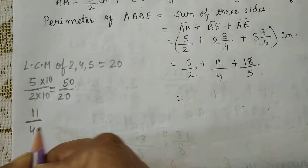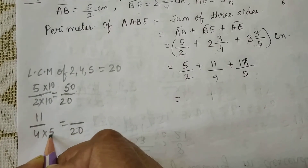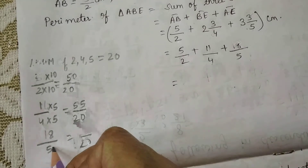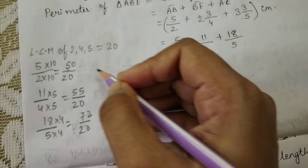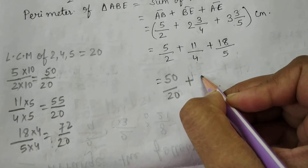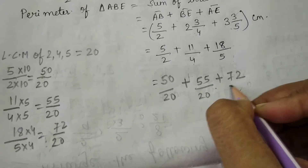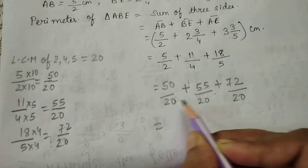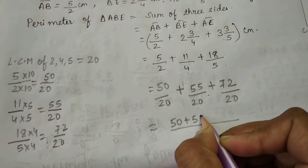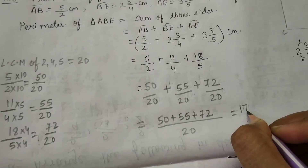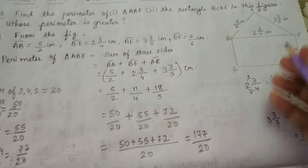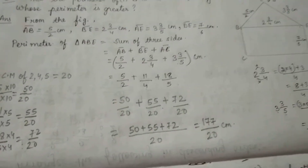For 11/4: 4×5 = 20, so 11×5 = 55, giving 55/20. For 18/5: 5×4 = 20, so 18×4 = 72, giving 72/20. Now add: 50/20 + 55/20 + 72/20. Keep the common denominator 20 and add the numerators: 50 + 55 + 72 = 177. So the perimeter of triangle ABE = 177/20.